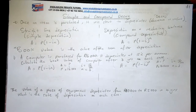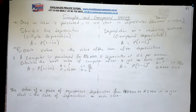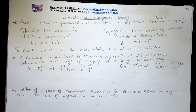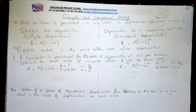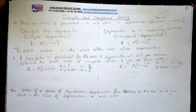We are looking at simple interest and compound decay. When you purchase something — like a car — once you leave the garage, your car starts to depreciate, meaning it loses value. If you bought it for 500,000, even if you try to come back and sell it immediately, it won't still be 500,000; it will cost less. This decrease in value is called depreciation.